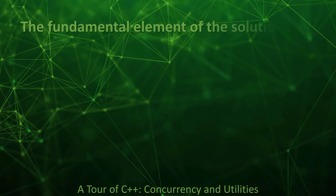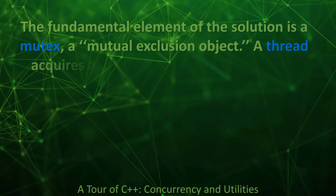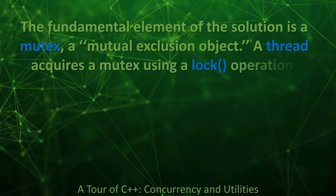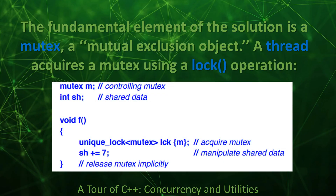The fundamental element of the solution is a mutex — a mutual exclusion object. A thread acquires a mutex using a lock operation. For example: mutex M — the controlling mutex; int sh — shared data. In void f(): unique_lock<mutex> lck{M} — acquire mutex; sh += 7 — manipulate shared data. The mutex is released implicitly.